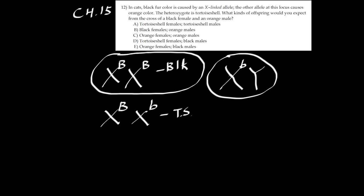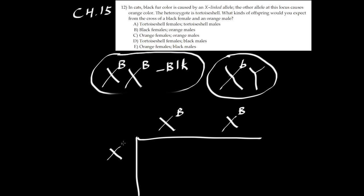Let me erase this and we'll do a sex-linked Punnett square. We have X capital B coming from mom, X capital B coming from mom, and we have X lowercase b and Y from dad.